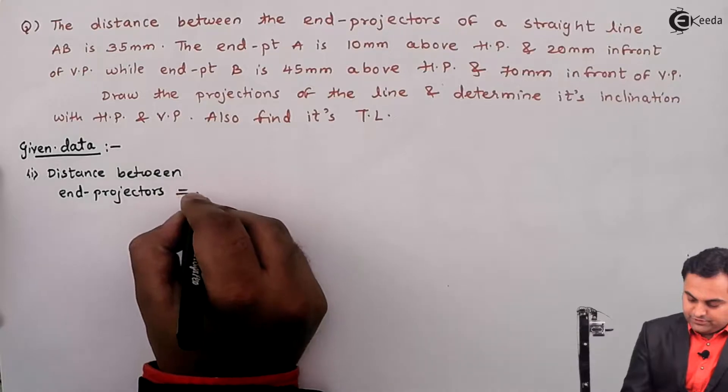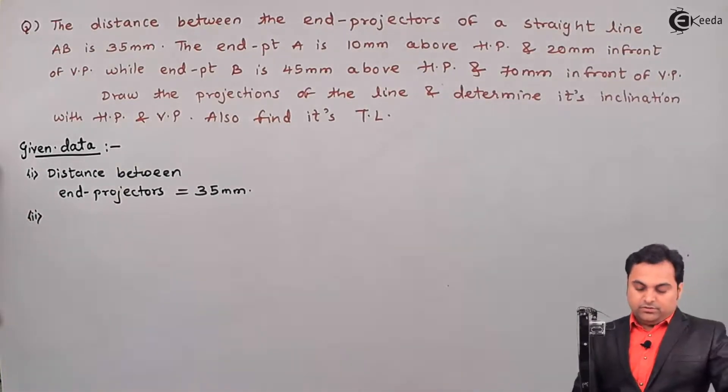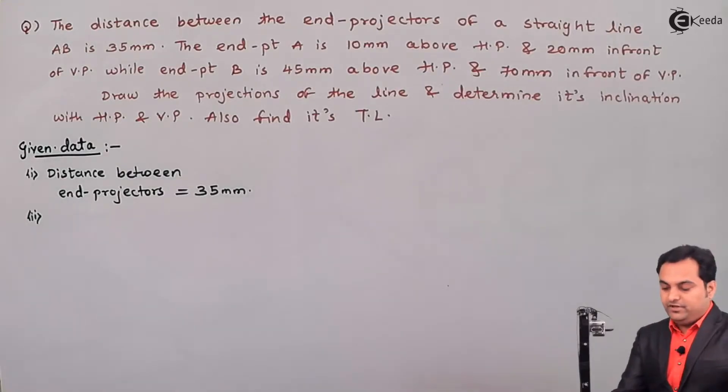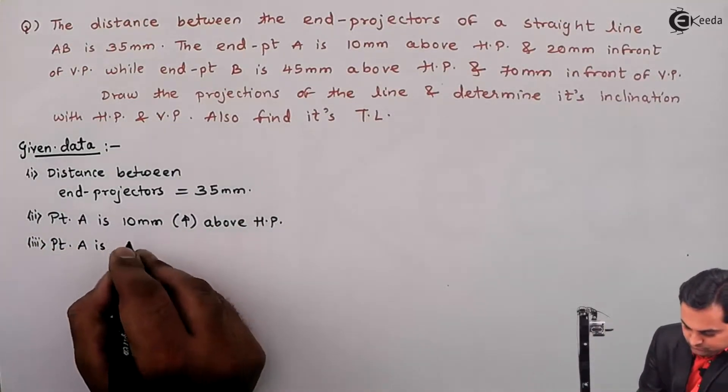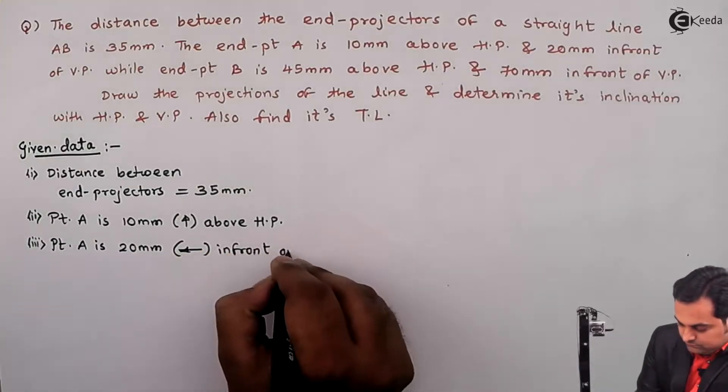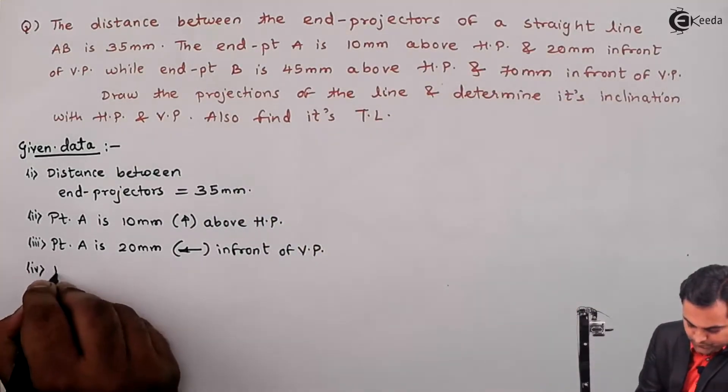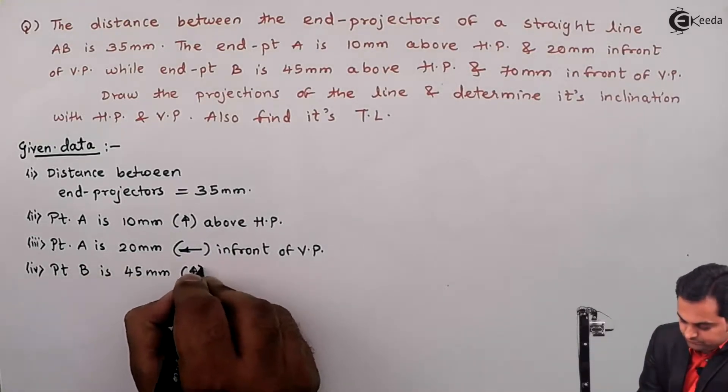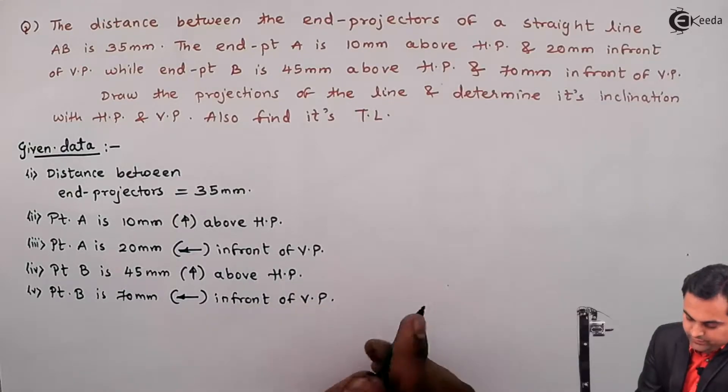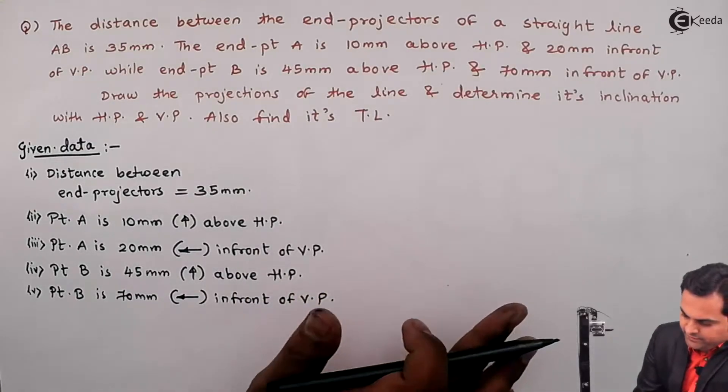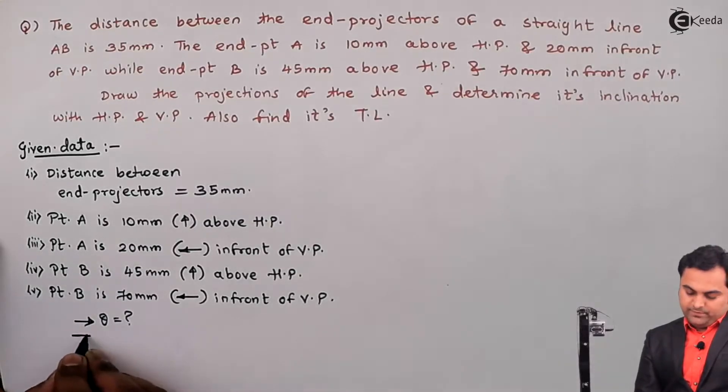The endpoint A is 10 mm above HP and 20 mm in front of VP. Next, endpoint B is 45 mm above HP and 70 mm in front of VP. Then draw the projections of the line and determine its inclination with HP and VP - so inclination with HP that is theta, with VP that is phi.